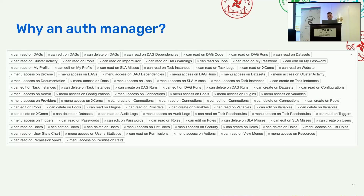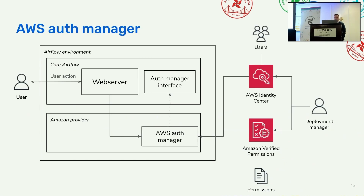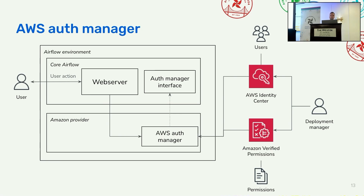Given these limitations, we might want to leverage the AuthManager concept and use a different AuthManager. Here we'll look at the AWS AuthManager. It leverages two services: AWS Identity Center to authenticate the user, and Amazon Verified Permissions for authorization. As a deployment manager, you go to AWS Identity Center to manage users and groups, and to Amazon Verified Permissions to manage permissions.